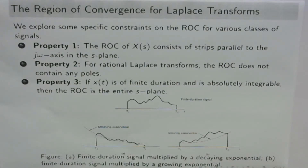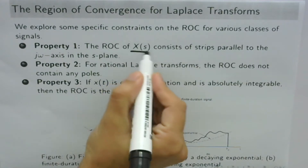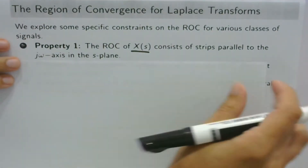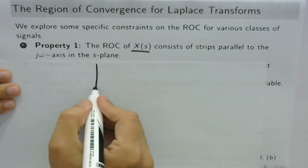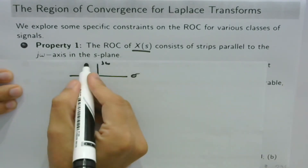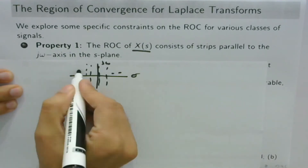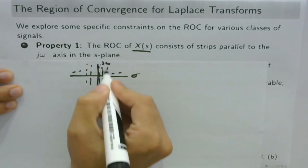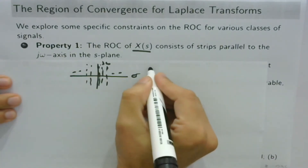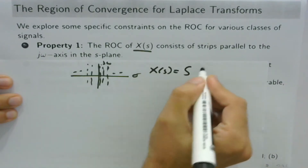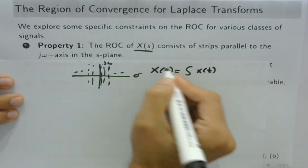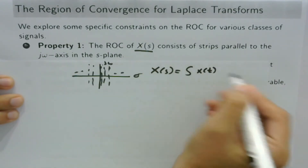The first property states that the region of convergence of X(s) consists of strips parallel to the jω axis in the S-plane. In the S-plane we have σ and jω. This property says that the ROC would be parallel to the jω axis and not σ. This is because X(s) is simply the integral of the time-domain signal X(t).